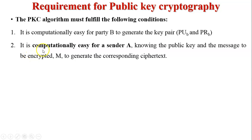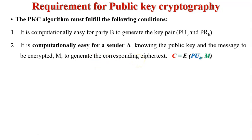Second, it is computationally easy for a sender A, knowing the public key and the message M to be encrypted, to generate the corresponding ciphertext C. Here the original message M is encrypted using the public key of B, which is shared with sender A, and it generates ciphertext C.